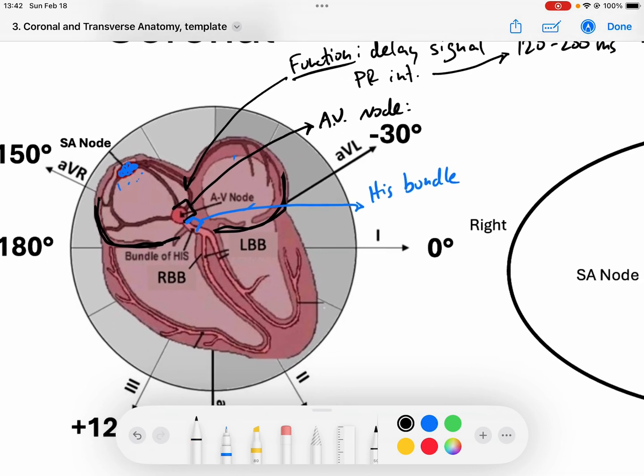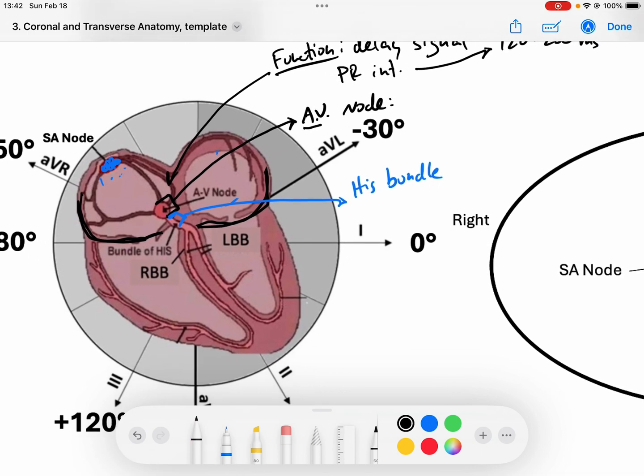And these two structures are what are passing along the signal. Now, it's really important to note that the AV node is the part of this conduction pathway in the AV junction. Collectively, this is the AV junction. And the AV node is what slows the signal down.